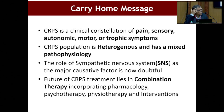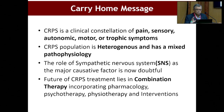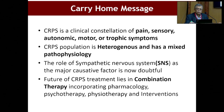The take-home message is that CRPS is a constellation of pain, sensory, autonomic, motor, and trophic symptoms. It has a heterogeneous and mixed pathophysiology. The sympathetic nervous system contributes in about 50% of cases. Combination therapy helps, involving pharmacotherapy, psychotherapy, physiotherapy, occupational therapy, and interventional therapies like intravenous ketamine and sympathetic blocks. Thank you.